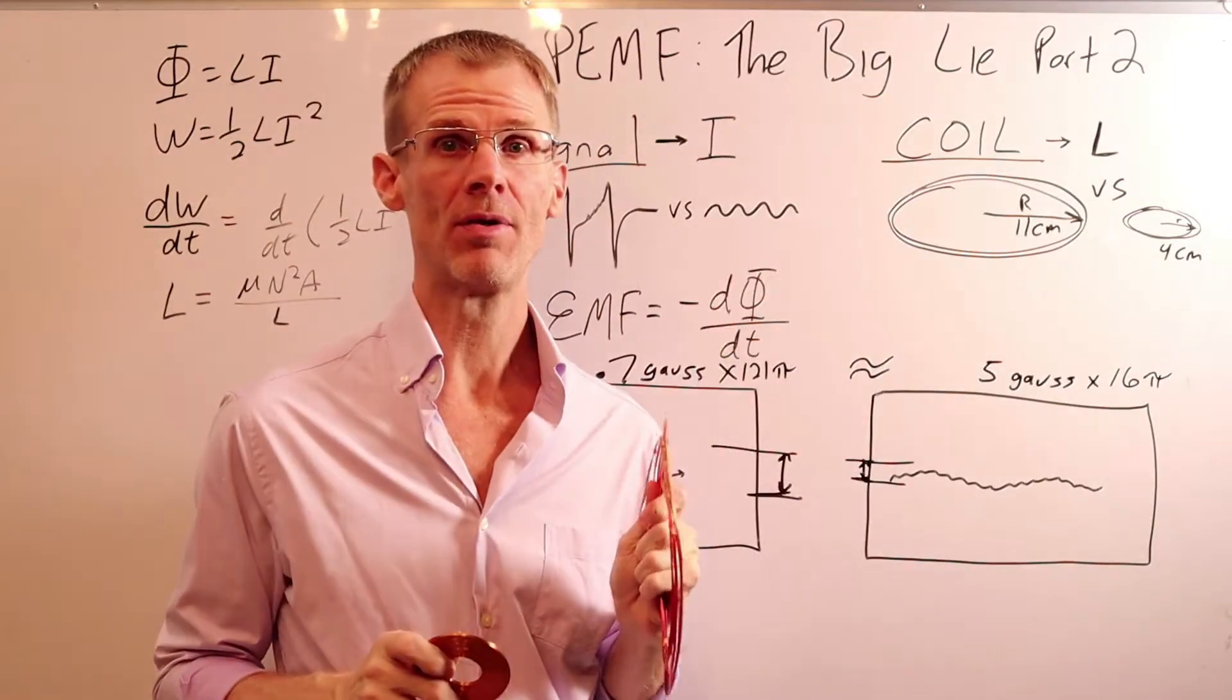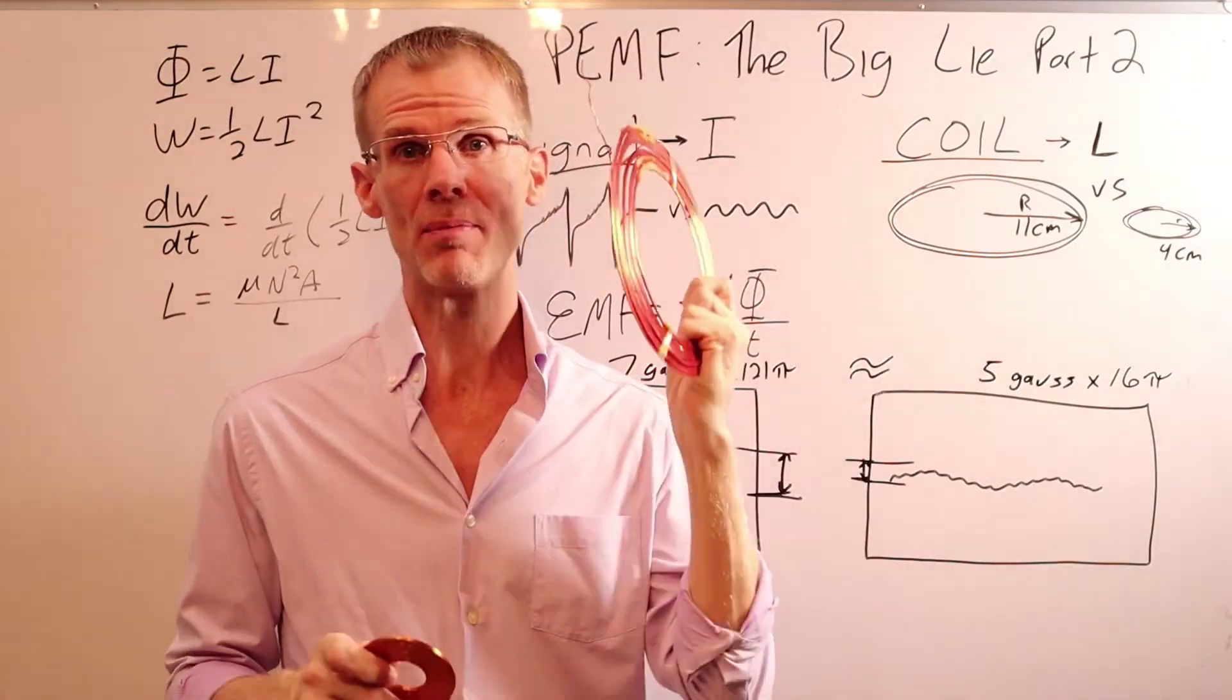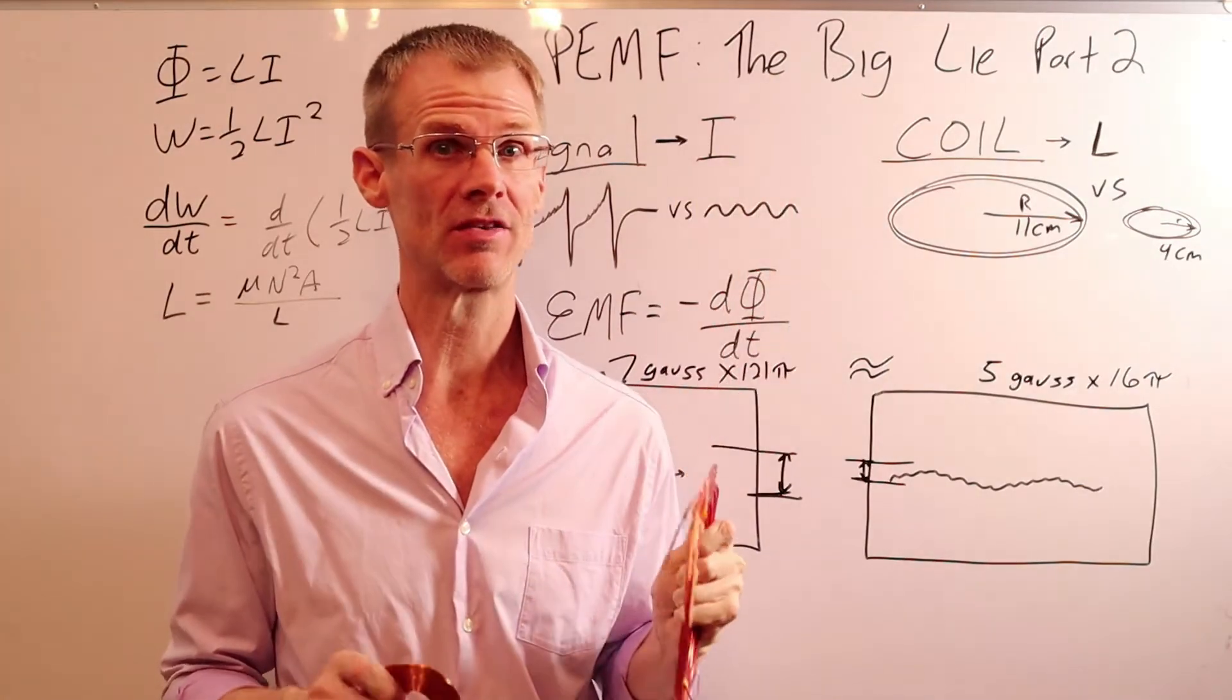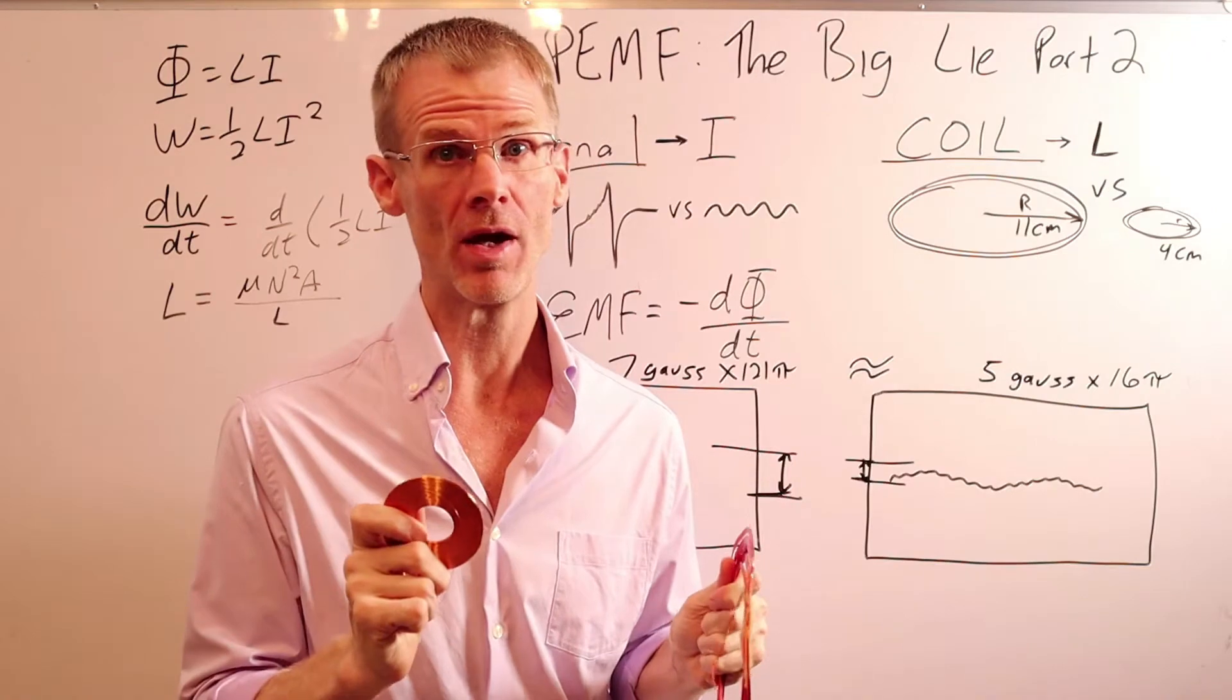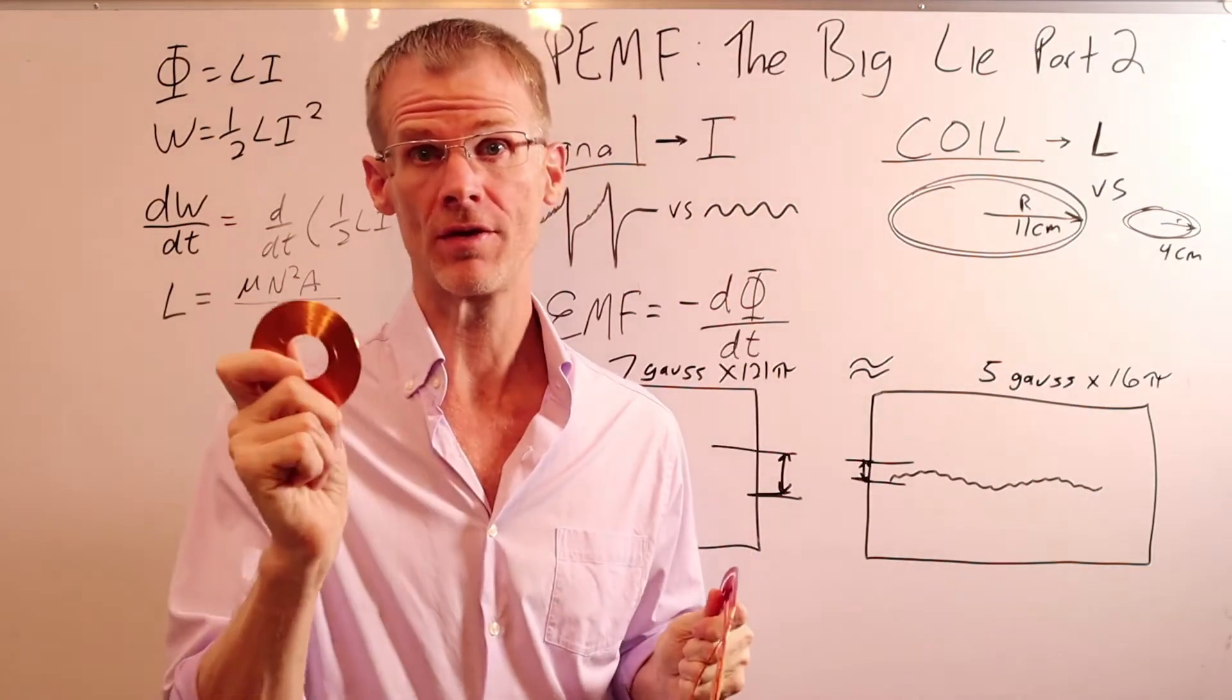In this video, PEMF The Big Lie Part 2, I'm going to show you how a 0.7 gauss PEMF device is more powerful than a 5 gauss. You heard me right, 0.7 greater than 5.